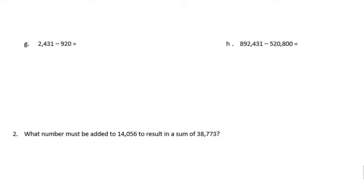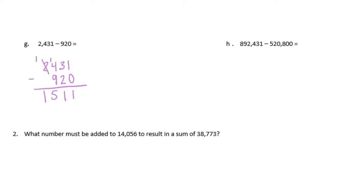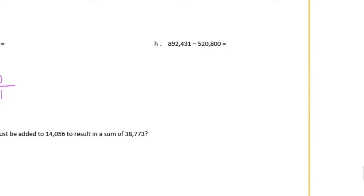Now G and H — we need to line these up ourselves. It's really important when writing these, with 2,431, that you make sure you're lining up the place values. If you don't line up the place values, you're going to subtract the wrong digits and get the wrong answer. When I subtract 920, the 9 must be under the 4 (hundreds place), 2 and 3 line up, and 1 and 0 line up. 1 minus 0 is 1, 3 minus 2 is 1, 4 minus 9 we can't do — borrow from the 2, it becomes a 1, this becomes 14 minus 9 is 5, and 1 minus nothing is 1. So we have 1,511.